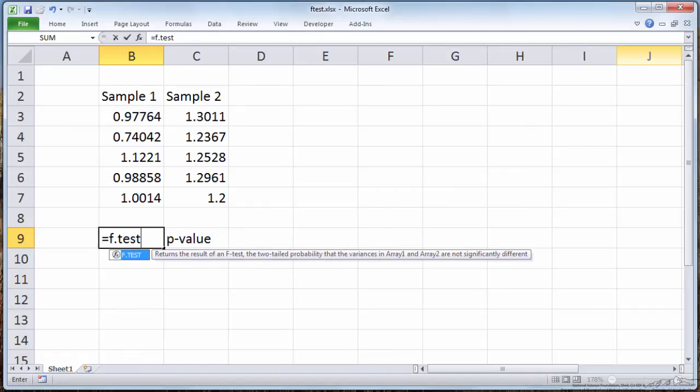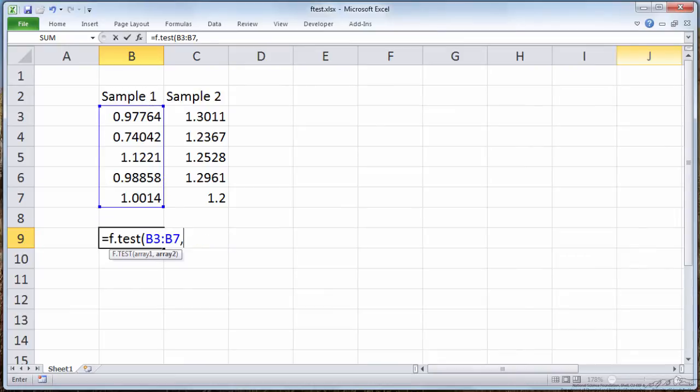And F.TEST accepts two arrays, the first one will be sample one, and the second array will be sample two. I'll close off the parentheses and push enter, and I do get the same p value, which suggests it's significant below alpha of 0.05, but insignificant if we chose alpha of 0.01.